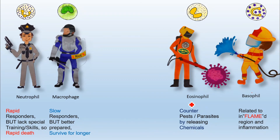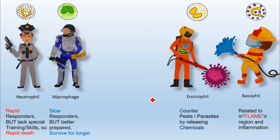There is a deliberate gap separating these two groups. On the right side of the screen, eosinophils and basophils are both linked to allergic reactions. On the left side, neutrophils and macrophages are both phagocytes — they engulf pathogens or infected cells. If a cell has been infected and is beyond saving, these phagocytes will engulf it.